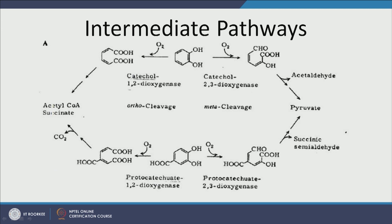Protocatechuate is essentially catechol with a COOH group attached. It can also undergo either the 1,2- or 2,3-dioxygenase pathway. Via protocatechuate 1,2-dioxygenase, the OH radicals are oxidized to COOH and the ring breaks down into carbon dioxide, acetyl-CoA, and succinate, entering the citric acid cycle. Via protocatechuate 2,3-dioxygenase, oxygen attaches at the 2,3 position, cleaving the ring to produce succinic semialdehyde and pyruvate for further degradation.